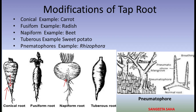Next coming to the tuberous root, which is basically thick and fleshy without any definite shape. It is found in sweet potato and the 4 o'clock plant, that is Mirabilis jalapa. Next is the pneumatophore, which is present in Rhizophora, the mangrove tree. These pneumatophores are breathing roots, modified for respiration and helping in the exchange of gases.